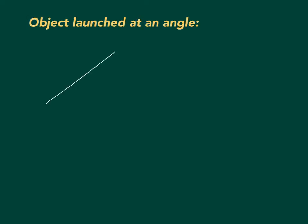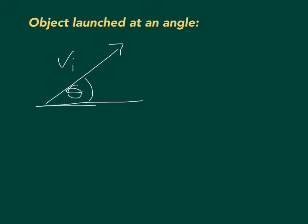So what's different about solving problems where the object is launched at an angle? Well, if you have an object launched with a certain initial velocity that makes a certain angle with the ground, this initial velocity has two components. Some of it is horizontal, and some of it is vertical. So we can divide the initial velocity into two components.